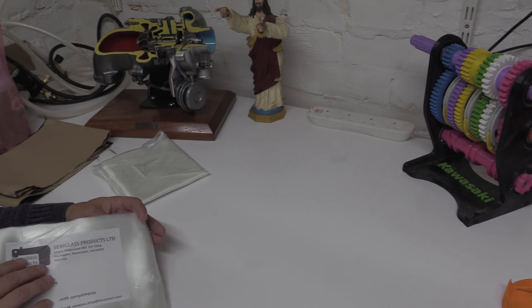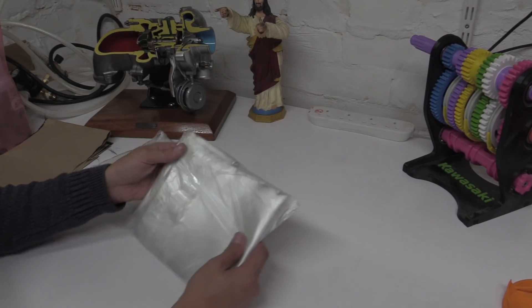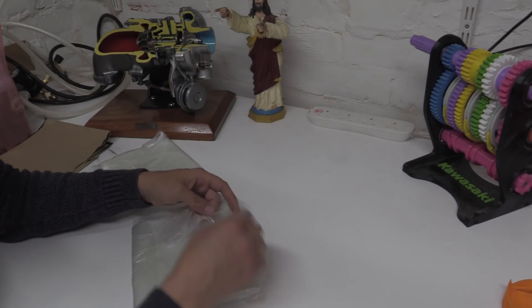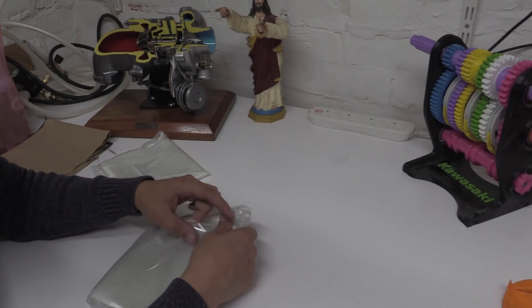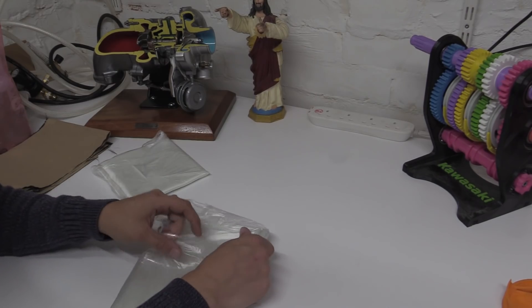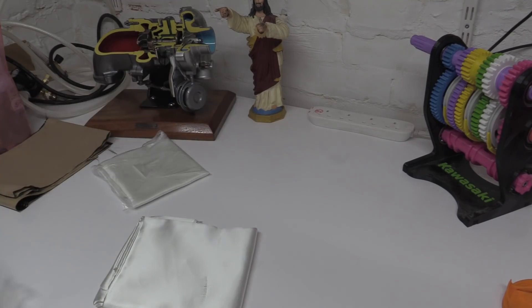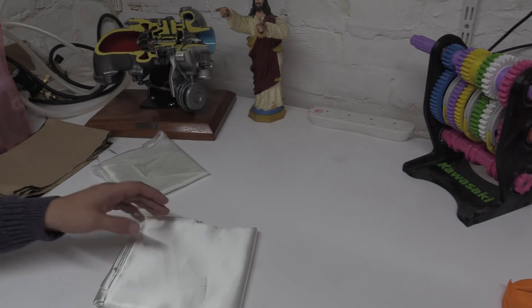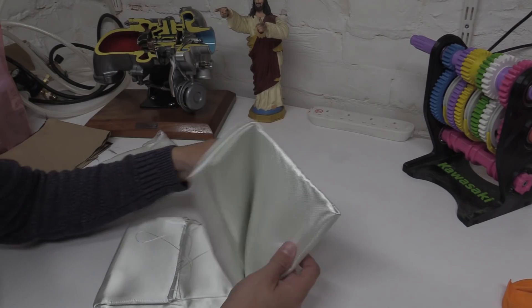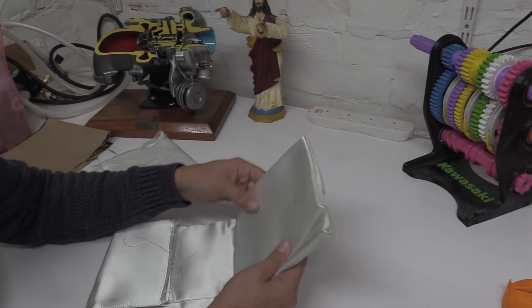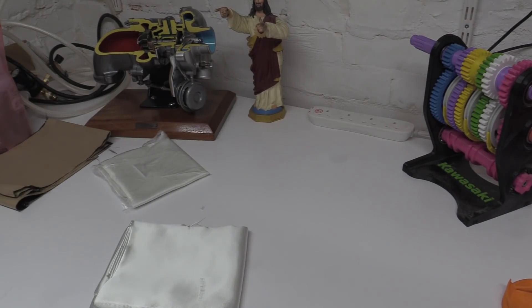So this is some cloth, this is the glass fiber stuff. I'm going to be using this soon for something you'll see. I can get this out. Basically this stuff is fiberglass cloth. You know, this is quite tight weave.